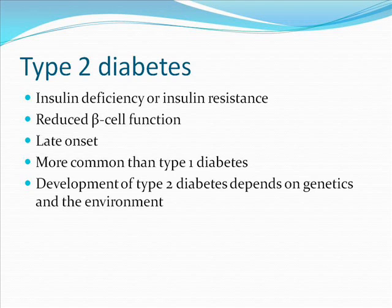Type 2 diabetes is characterized by insulin deficiency or insulin resistance. Initially, there is no beta cell degeneration; however, gradually the beta cell function reduces. Traditionally, this occurs in subjects that are over 40, as the onset of type 2 diabetes is late. Type 2 diabetes is much more common than type 1 diabetes, as approximately 250 million people worldwide are currently suffering from this disease.